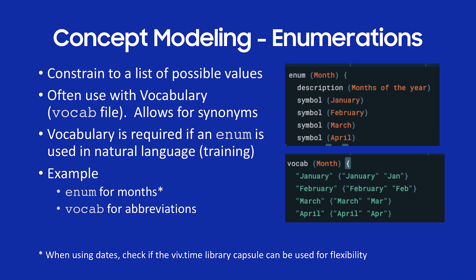Jumping right in and talking about concept modeling — the first thing I want to talk about is enumerations. Enumerations are how you constrain a concept to a list of possible values. In this sample code I have an enumeration set up for the month: January, February, March, April. That means if we're going to use this concept, the inputs would be limited to months of the year.